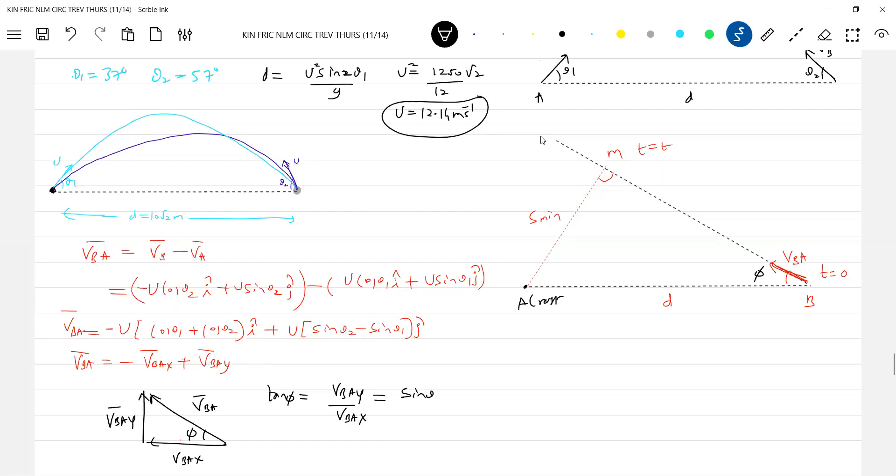So this will become sin theta. I'll get the tan phi. After getting the tan phi, the value of that minimum distance.